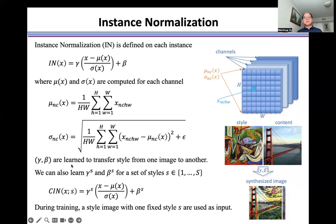Gamma and beta are learned to transfer style from one image to another. We can learn γ_S and β_S for each style S in this formulation. During training, a style image with one fixed style S is used as input.